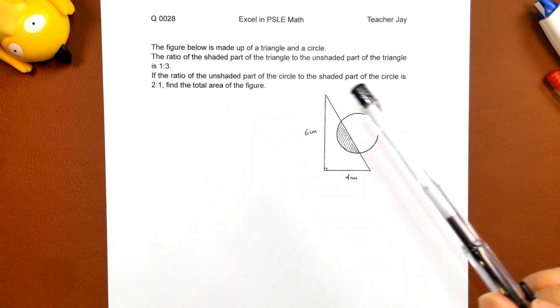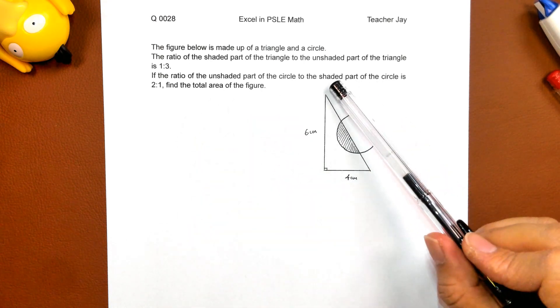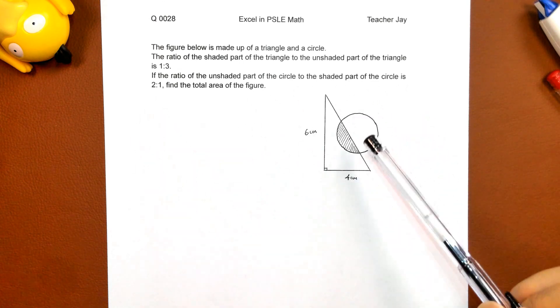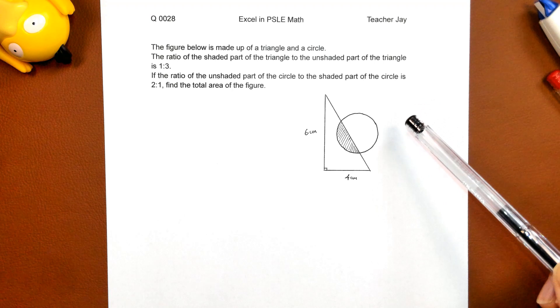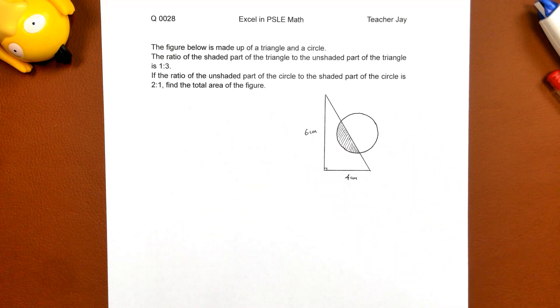And the ratio of the unshaded part of the circle to the shaded part of the circle is 2 to 1, not drawn to scale this figure. So find the total area of the figure.